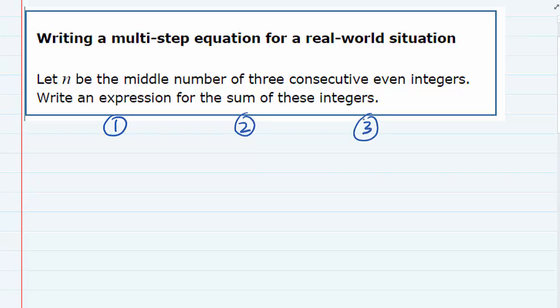These are consecutive integers, and they say in the instructions to let n be the middle integer. So n is this guy right here, the one in the middle.